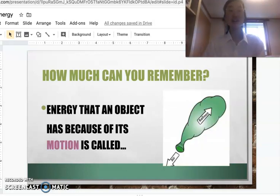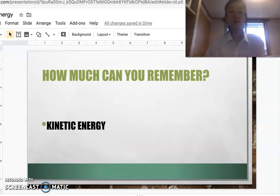If you said potential energy, you are correct. Question number two, energy that an object has because of its motion is called blank. So just like the balloon where the air is finally coming out of the balloon, the air is showing what kind of energy here. If you said kinetic energy, you got it again.